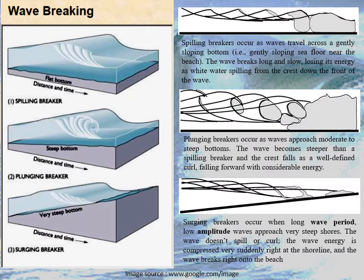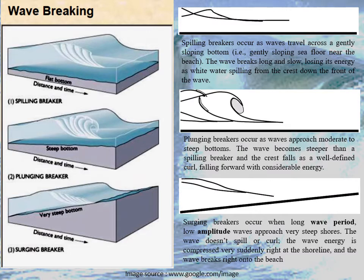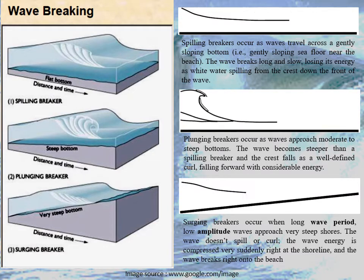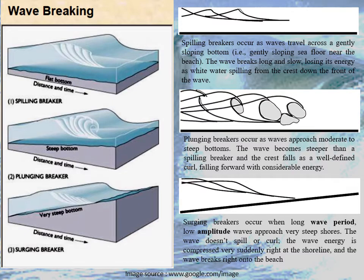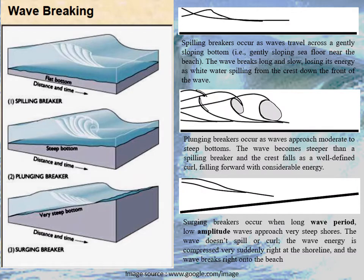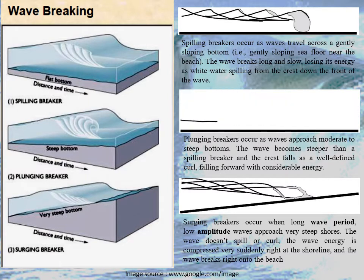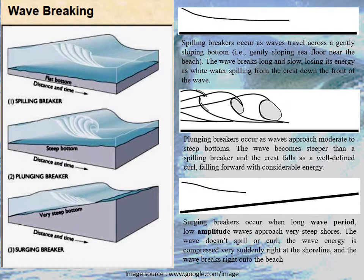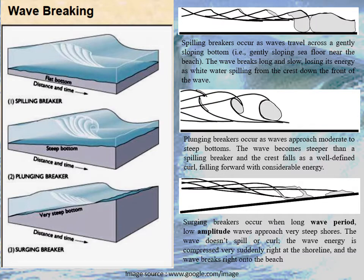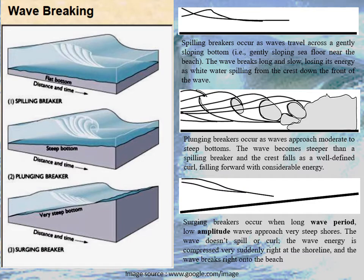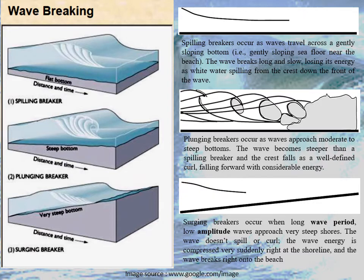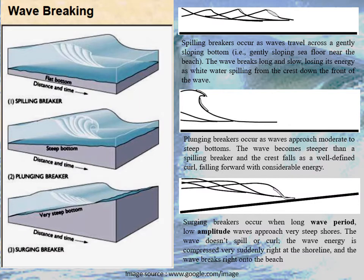The second type is the plunging breaker, where the crest curls over and crashes down on the advancing wave base. These are more characteristic of relatively steeper slopes of the ocean bottom. Plunging breakers occur when a wave approaches a moderate to steep bottom slope. In this type, the wave increases its height and after some time suddenly crashes or falls in the forward direction with considerable energy.